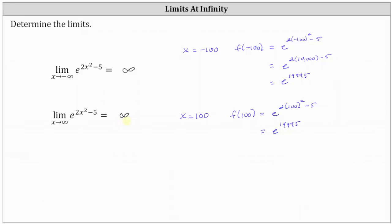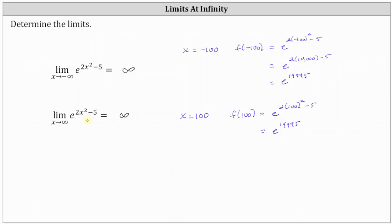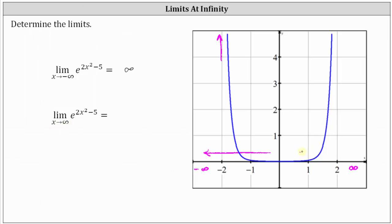Now let's quickly verify this by looking at the graph of the exponential function. On the x-axis, positive infinity is to the right and negative infinity is to the left. For the first limit, x is approaching negative infinity, so we're moving left along the function. As we move to the left, the exponential function values increase without bound and approach positive infinity. Similarly, as x approaches positive infinity, moving to the right along the function, the function values also increase without bound and approach positive infinity. The graph verifies our limits are correct.